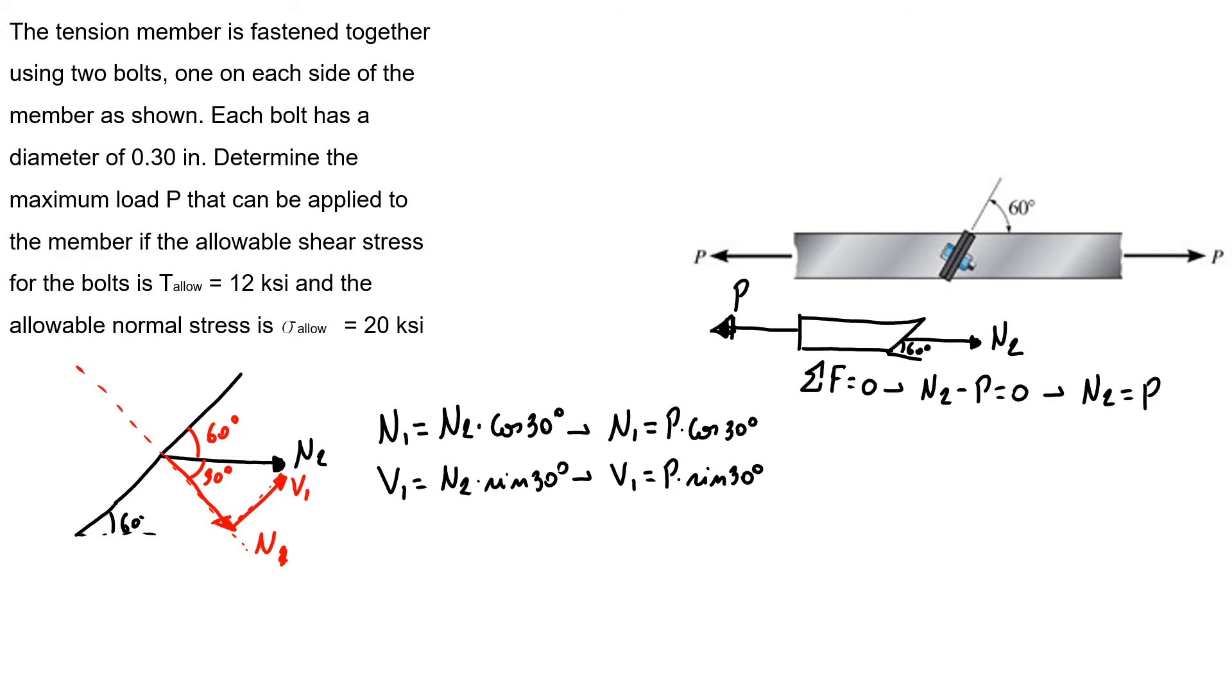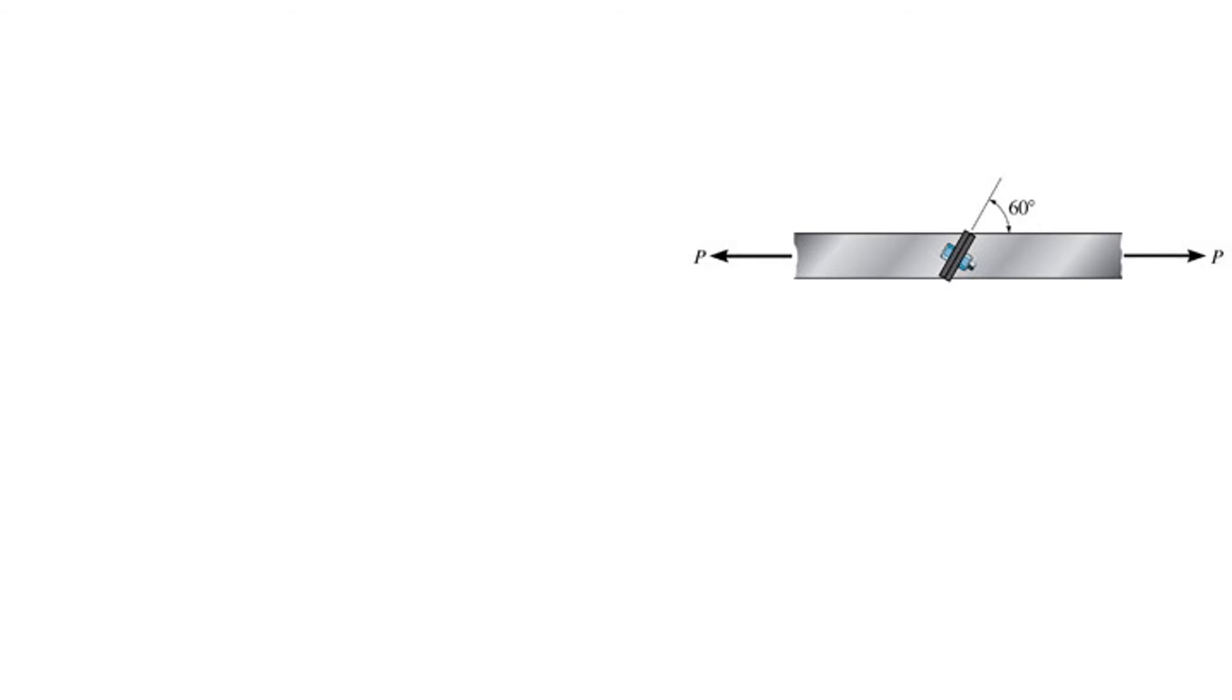In the next slide we're going to find our stress. We know that normal stress is equal to N1 over area. So we know our N1 is P times cosine of 30, so P equals σ_allowable times area over cosine of 30.